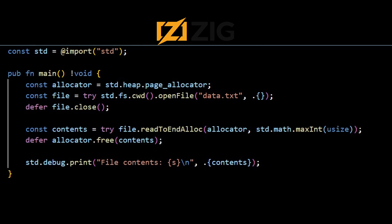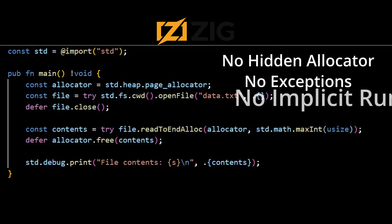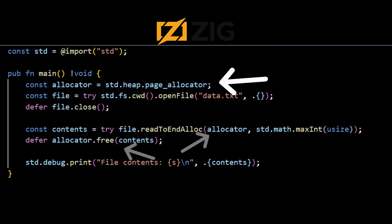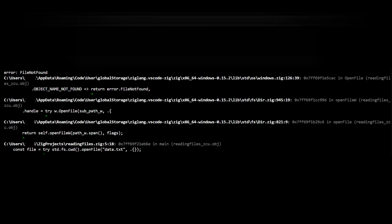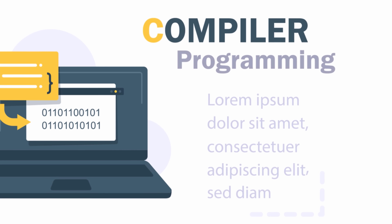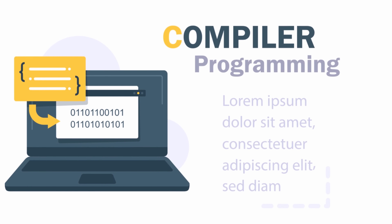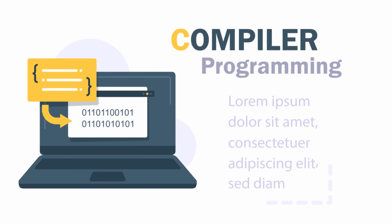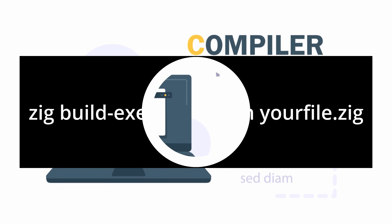Zig first. Zig is brutally explicit. No hidden allocator, no exceptions, no implicit runtime. You pick an allocator, you pass it around, and you own the consequences. Errors are values, not sudden control flow teleports. When you write code in Zig, the language tries not to surprise you later. Zig's philosophy is: say less, reveal more. Want to see what the compiler actually spit out? You can emit readable assembly with a compiler flag and inspect exactly what will run.